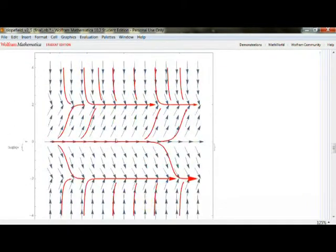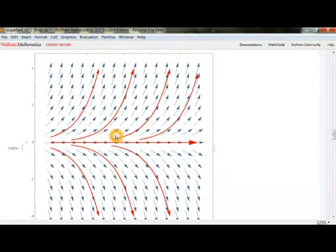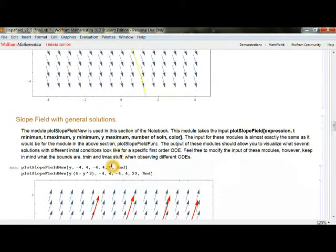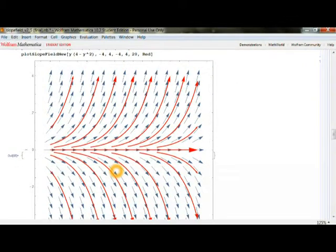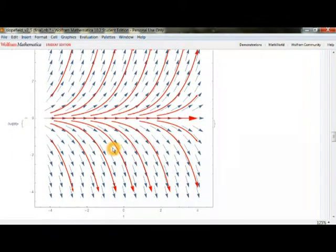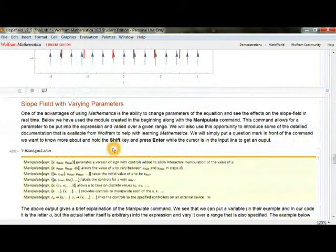Our second one is this particular example. You can also increase the number of solutions. So if we make 18, in case you were really ambitious, there you go. You'll note that they always follow the slope field that we've chosen.